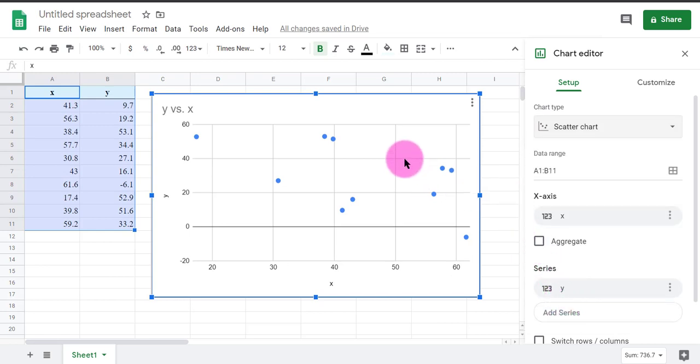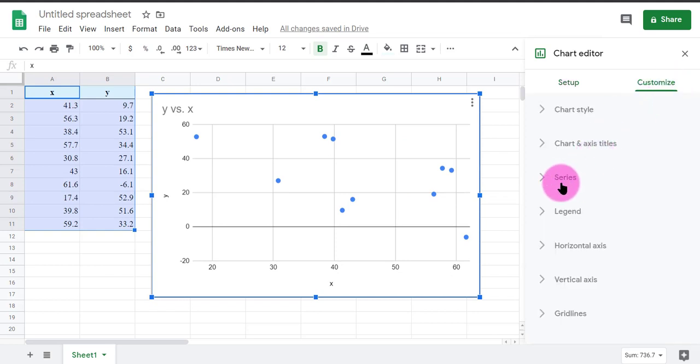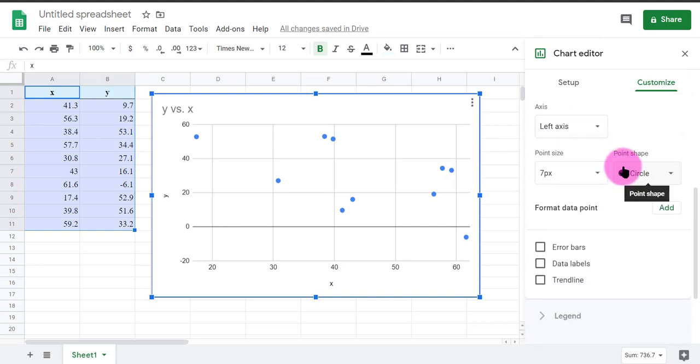Now that we've got the scatterplot here, we're going to customize it. We want to go to series, and I'm going to add the trend line.